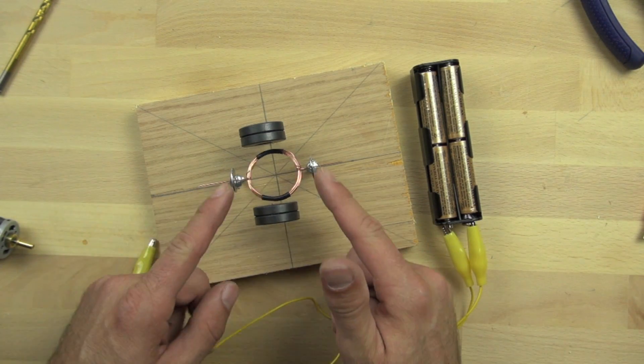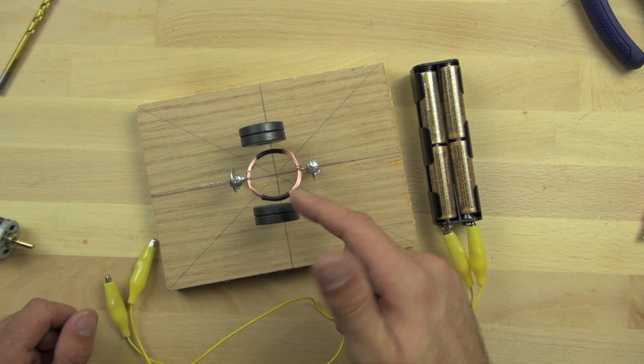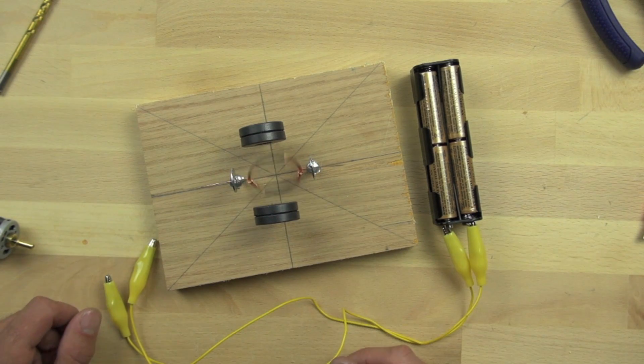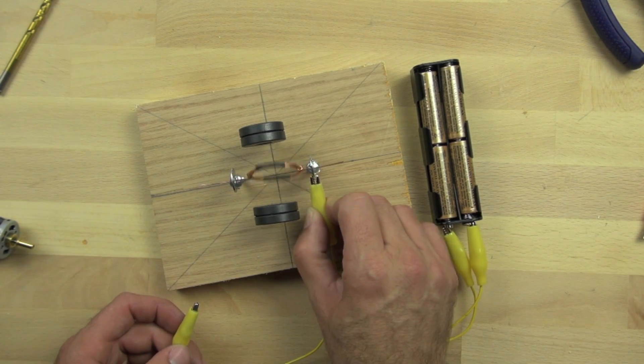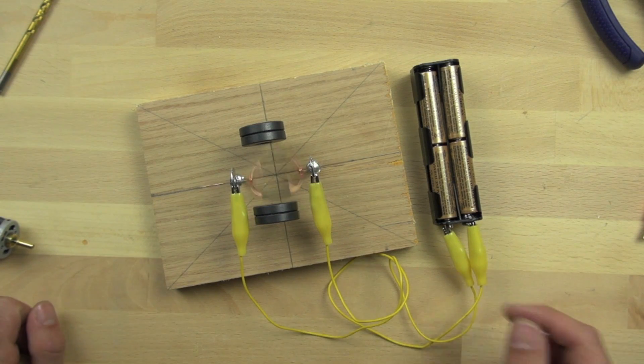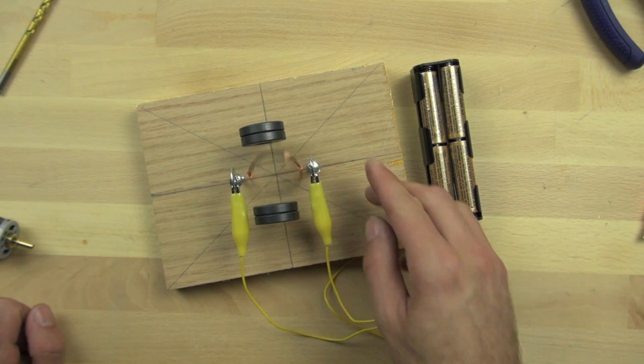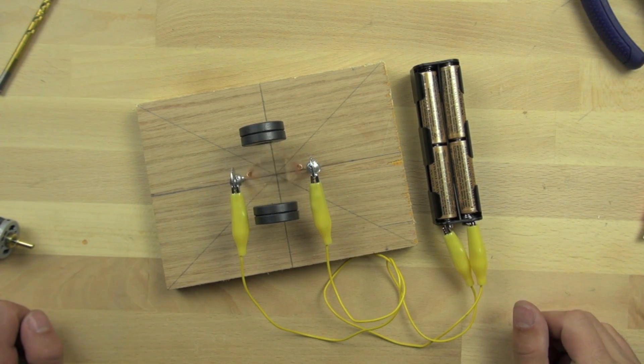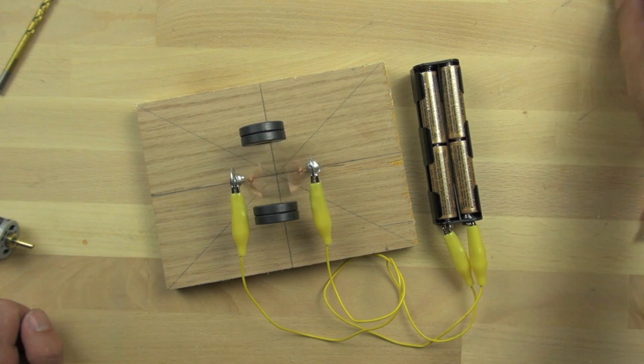And before it does that, the electricity flows out of the other end of the coil back to the batteries. And then the coil flips over. And then the process repeats. And so what's happening is that the coil is functioning like an electromagnet, pushing against our permanent magnets and rotating again and again.